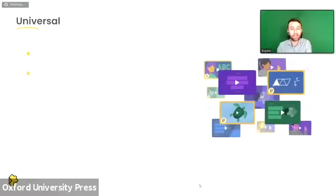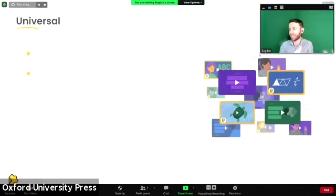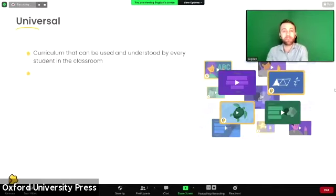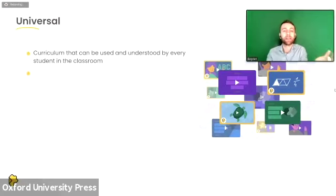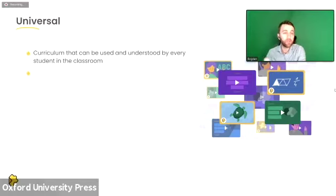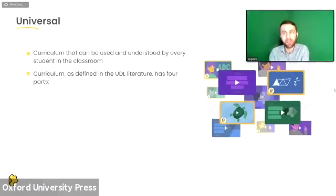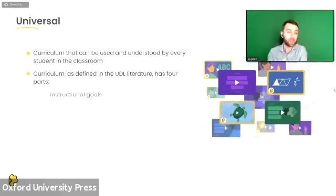Where does the name Universal Design for Learning come from? "Universal" basically refers to curriculum that can be used and understood by every student in the classroom — just as anything that's universal is easy to use by anybody everywhere. UDL was built with this idea in mind. Curriculum, as it's defined in UDL, doesn't refer just to the content. There are four parts that are covered, and all of them can be tweaked and improved using the UDL principles and framework.